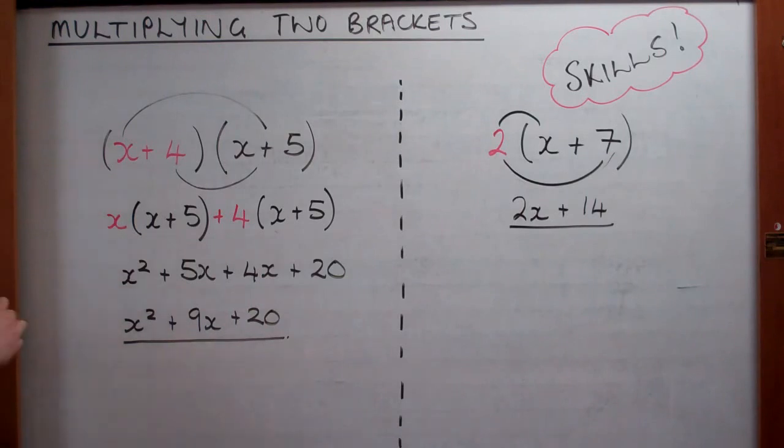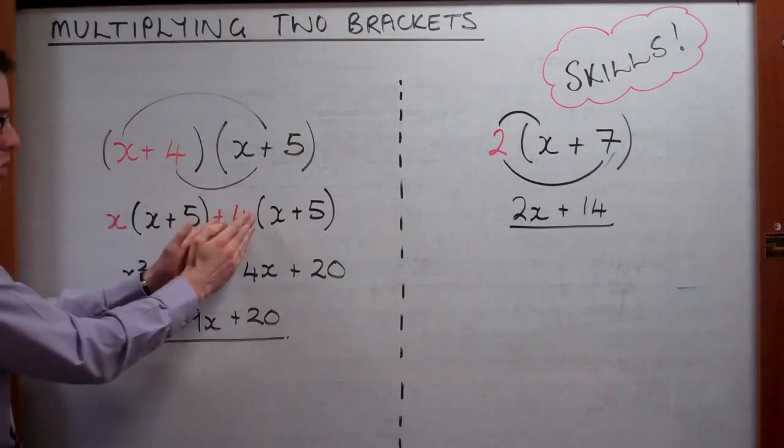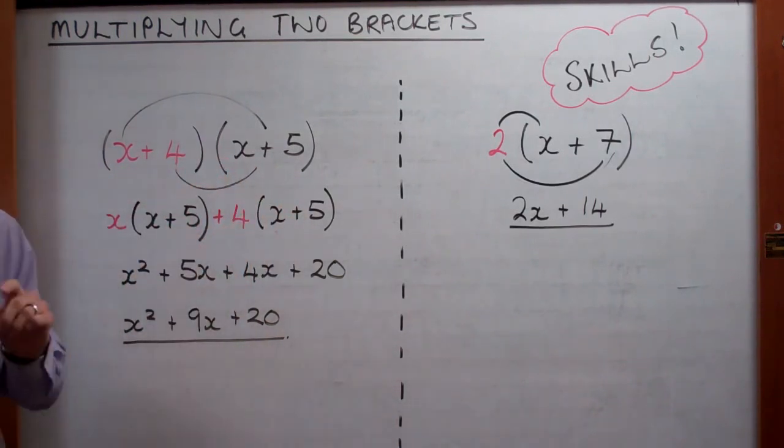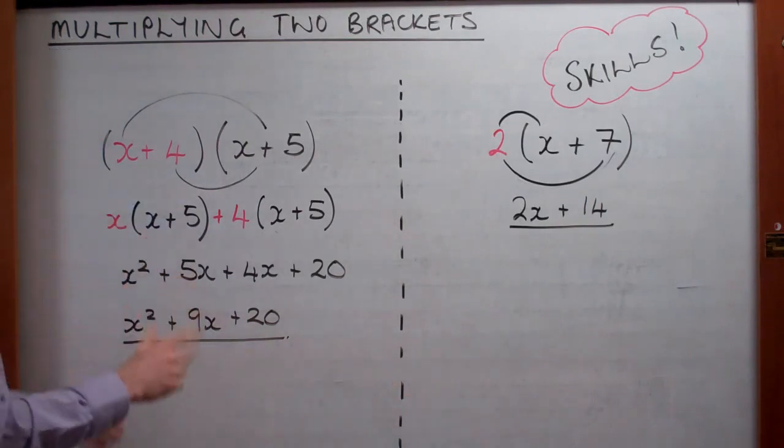So if we go back over it again, we have split the first bracket. So the x goes here, four goes there, and repeated the second. And that's what you do for all of these. So remember, split the first, repeat the second. We'll look at some examples.